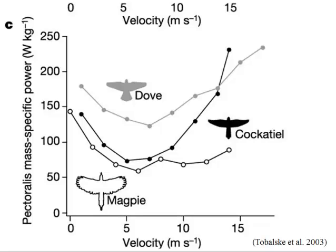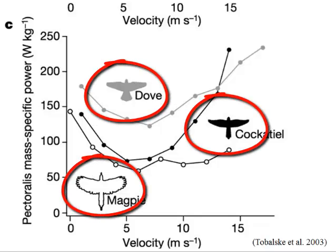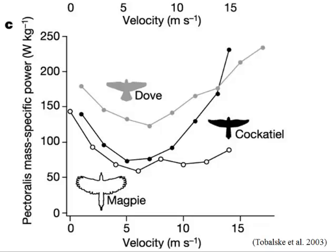Then subsequent work by Brett Tobalski and others showed that different bird species do differentially well at compensating for drag at different speeds. So Tobalski and these others flew bird species with very different wing shapes and wing flexibility, and showed that the cockatiel's power curve is really quite U-shaped, not unlike Tucker's budgerigar curve.